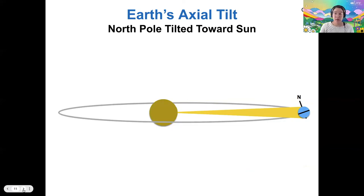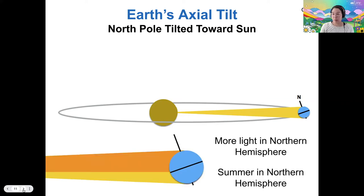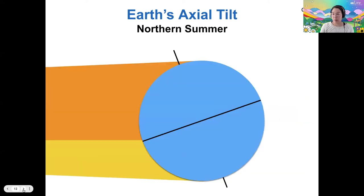The complete opposite situation happens when we are at aphelion. So during northern summer, now the northern hemisphere is receiving more sunlight. It's summertime in the northern hemisphere, and now the situation is reversed where the Arctic Circle is illuminated all day and the Antarctic Circle is dark.